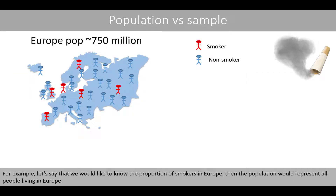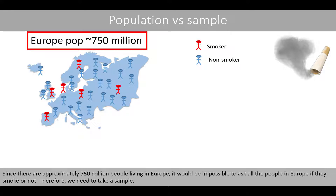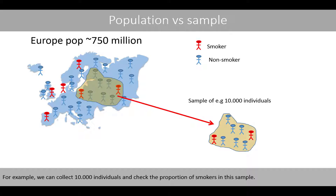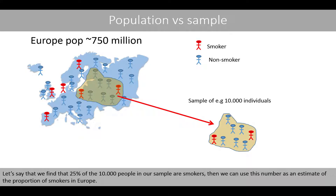For example, let's say that we would like to know the proportion of smokers in Europe. Then the population would represent all people living in Europe. Since there are approximately 750 million people living in Europe, it would be impossible to ask all of them if they smoke or not. Therefore, we need to take a sample — for example, 10,000 individuals — and check the proportion of smokers in this sample. Let's say that we find that 25% of the 10,000 people in our sample are smokers. Then we can use this number as an estimate of the proportion of smokers in Europe.